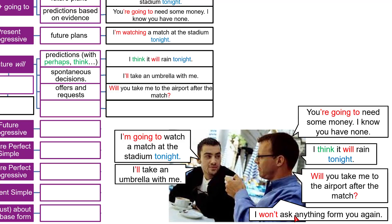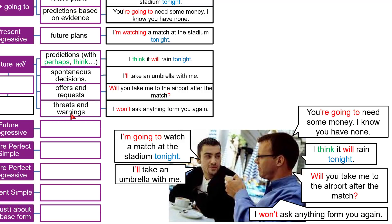"I won't ask anything from you again — please take me." "I won't ask you" is a warning: do it, and I will not ask anything from you again. Use 'will' for threats and warnings. For example: "I won't speak to you again" — that is a threat or a warning.